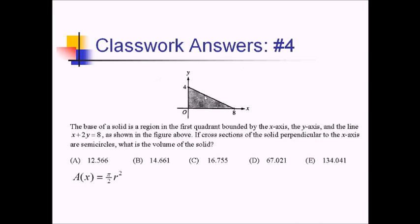This distance is just going to be the y value of whatever this function is. The function is hidden inside the line formula — we're going to have to rearrange it to get y by itself. Subtracting x from both sides and dividing by 2 gives us y equals 4 minus 1 half x. Since this gives us the height or distance across, we need to take half of that as the radius. And if I divide all this by 2 to make calculator work easier, I get 2 minus 1 fourth x inside there.